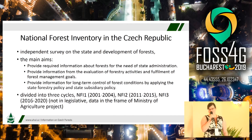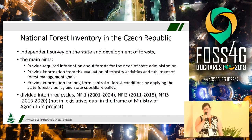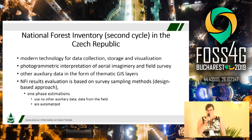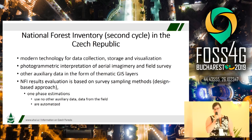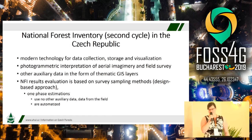Our national forest inventory is divided into three cycles. The first one was carried out from 2001 to 2004, after which there was a quite long pause. After that we had the second national inventory cycle, and now we are at the end of the third national forest inventory cycle, carried out from 2016 to 2020. We are now evaluating the results from the second national inventory cycle using modern technology for data collection, storage, and visualization. We use photogrammetry interpretation to detect forested areas, and at those forested areas a field survey was carried out.